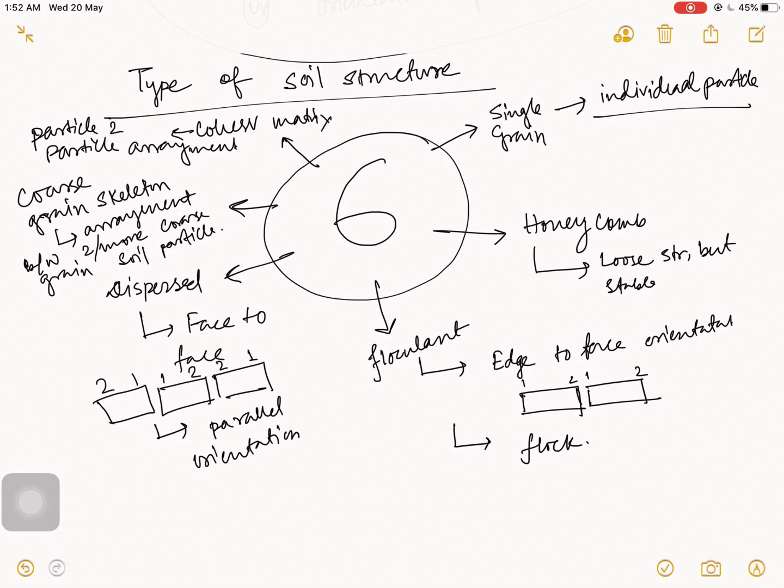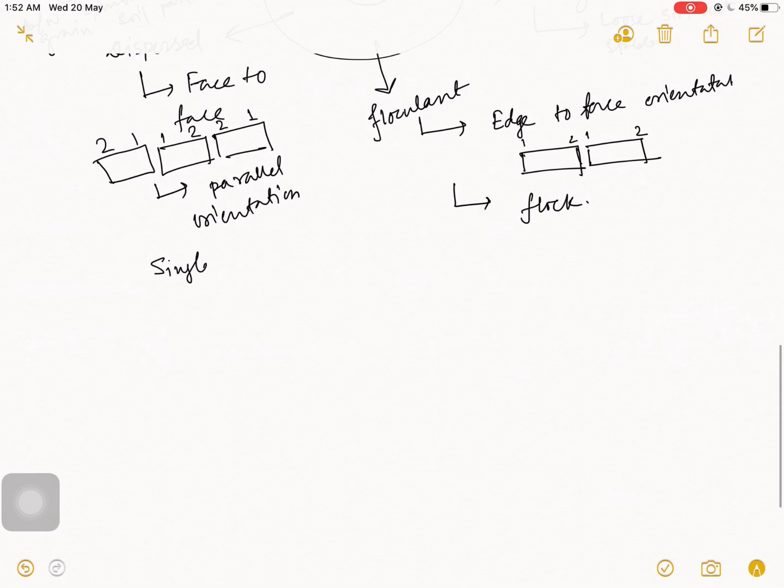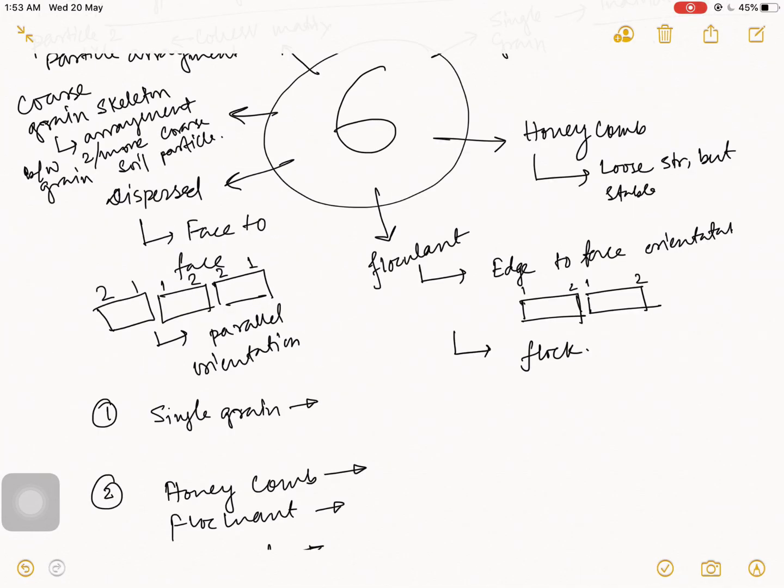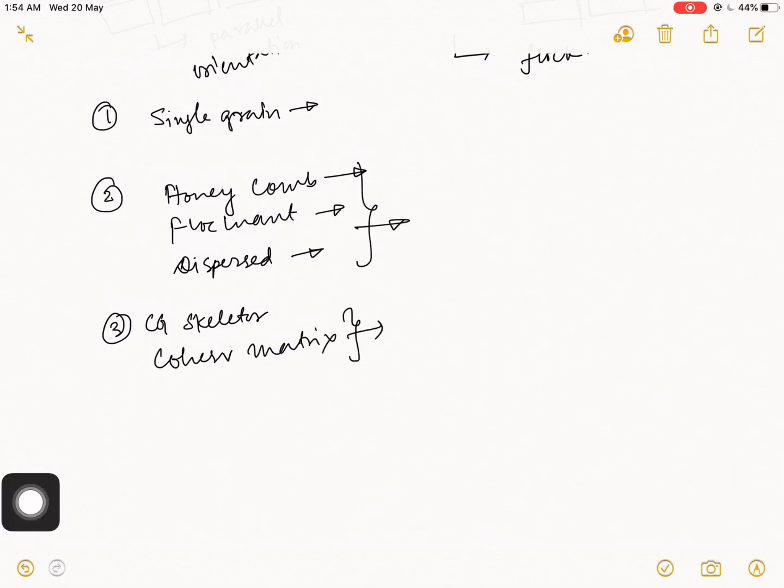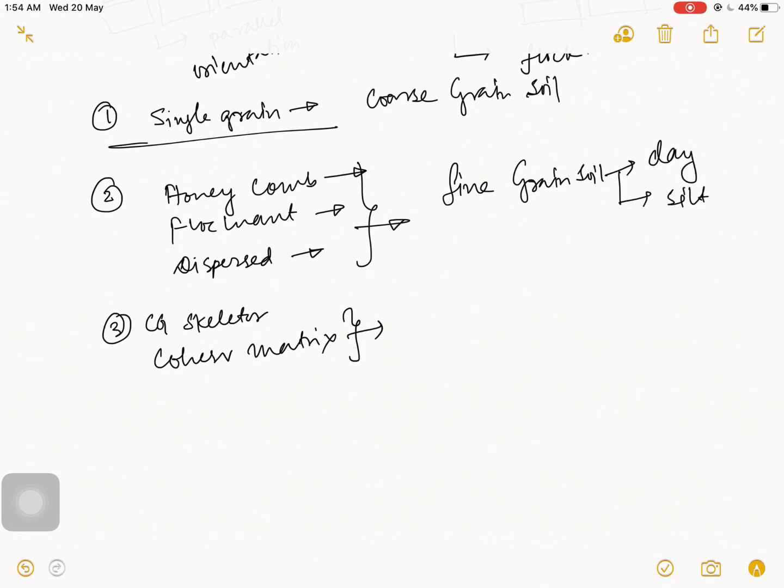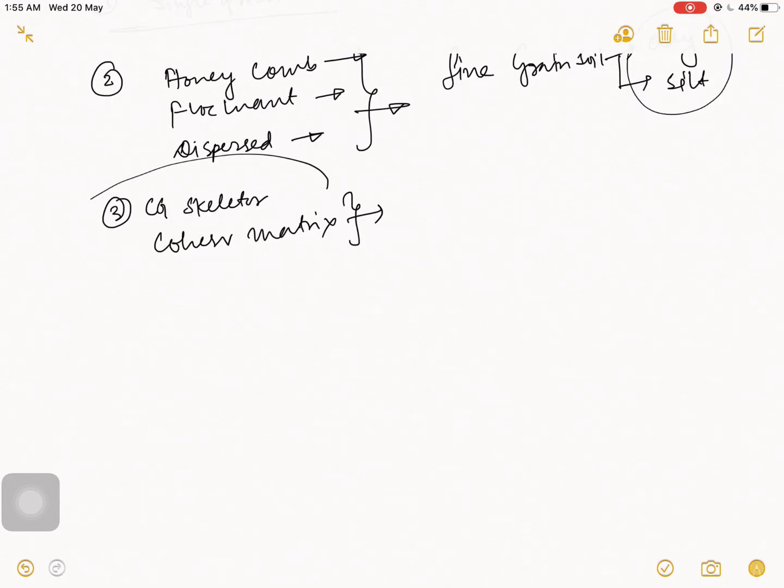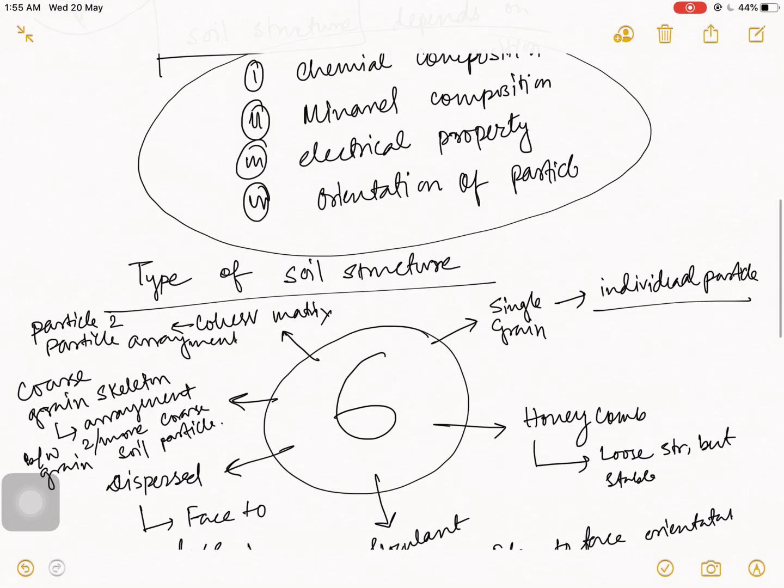So these are the six types of structures. Now I am showing you some other things: first single grain, honeycomb, flocculant, then dispersed, and third coarse grain skeleton and cohesive matrix. So basically these types of grain we find in coarse grain soil. These types of things we are finding in fine grain soil, that means clay and silt. These two things are important so that you can understand the compaction structure. Furthermore, this and cohesive matrix we find in composite soil.